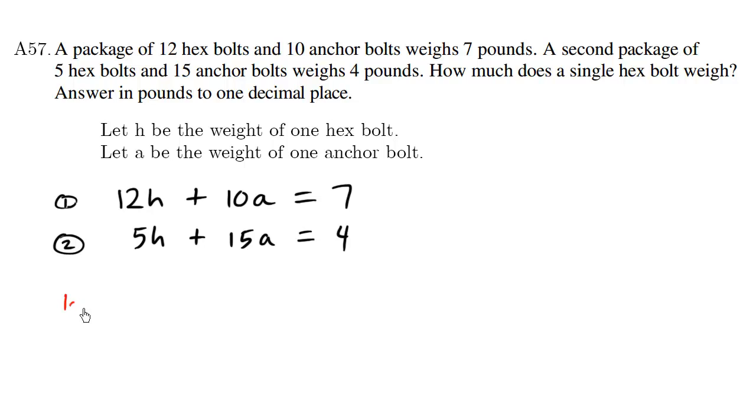So this here is equation 1A. And I'm going to make the 10A here into a 30A. So what I'm doing here is I'm going to multiply each term by the number 3. 3 times 12H is going to be 36H. And then 7 times 3 is 21.